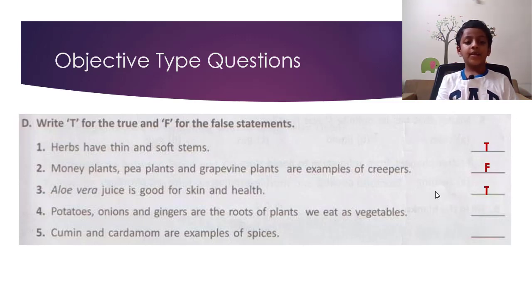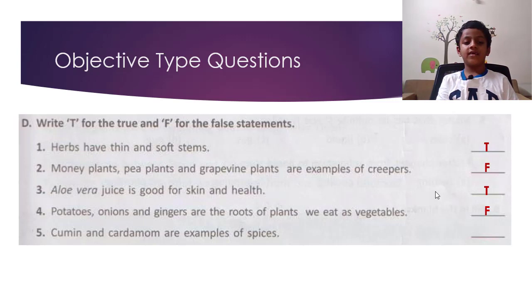Potatoes, onions and gingers are the roots of plants we eat as vegetables — the answer is false. Cumin and cardamom are examples of spices — the answer is true.